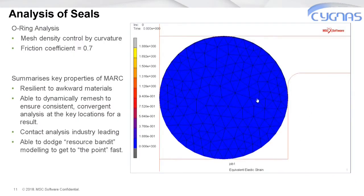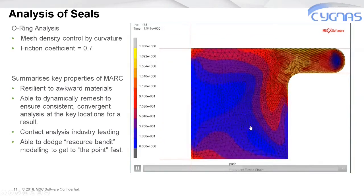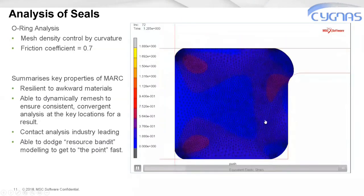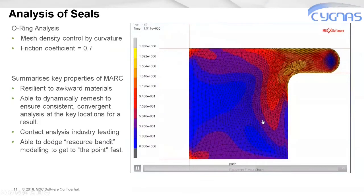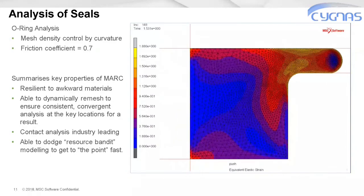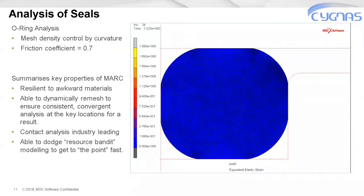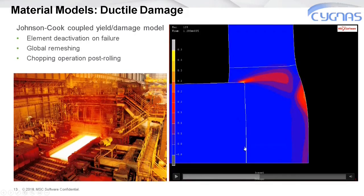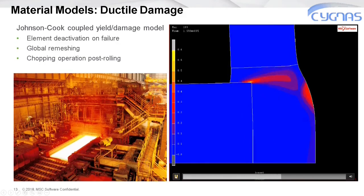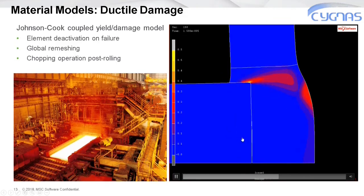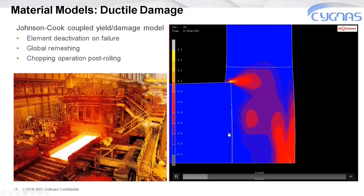This is a case of a highly thermally dependent — softened by heat — steel manufacturing process. You can see the shearing away of material as facilitated by dynamic remeshing. It's one of many yield damage models available. A composite reinforcement strategies example systematically checks various configurations for pressure vessels.